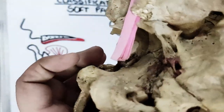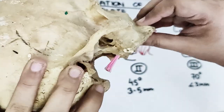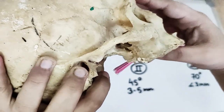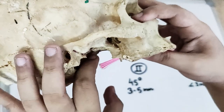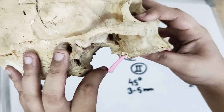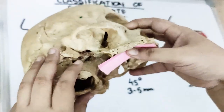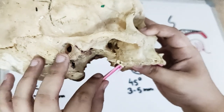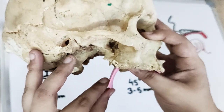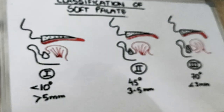If the soft palate is almost straight — similar to how the hard palate lies — that is Class 1. If the soft palate descends a little, making an angle of around 45 degrees, that is Class 2. And if it descends even more, making an angle close to 70 degrees, that is Class 3.